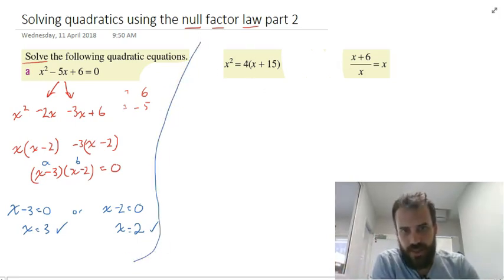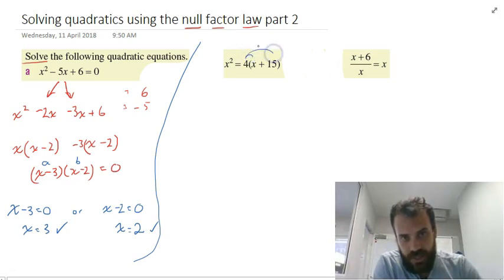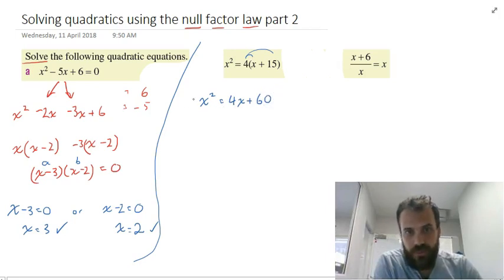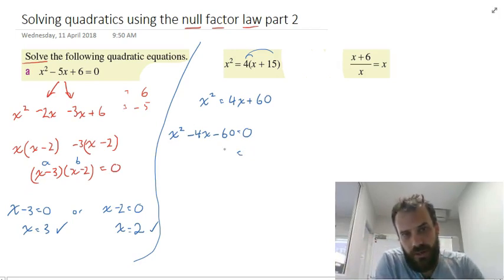This one here: x squared equals 4x plus 15. It doesn't immediately look like a quadratic, but you can see an x squared, so maybe. Let's work through it step by step. If I expand these brackets, that's going to give me x squared equals 4x plus 60. I can put all of this on one side — that'll give me x squared minus 4x minus 60. I need two numbers that when multiplied make 60 and when added together make negative 4.